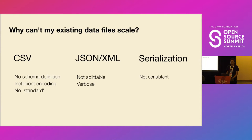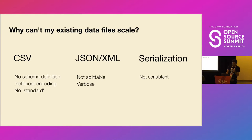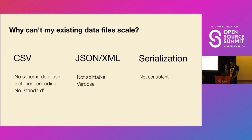CSV has no associated schema, so you're always guessing column types. SQL parsing is also non-standard — implementing a CSV parser reveals many exceptions. Other formats are worse: JSON and XML are verbose and can't be split in the middle. Serialization formats like Java serialization or Python's pickle are also problematic because they're not consistent between language versions, meaning a serialized object stored in a file system may not work after a version change.